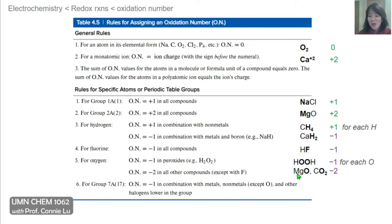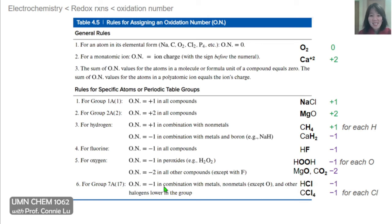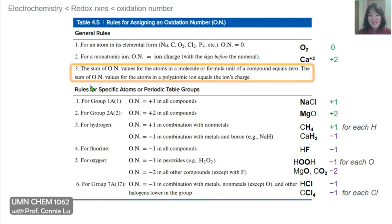Again, oxygen is −2 in common cases like MgO or CO₂, but in a peroxide each oxygen atom has an oxidation number of −1. For the halides, they tend to have an oxidation number of −1 when combined with metals, nonmetals, or other halogens lower in the group — the only exception is oxygen. So for example, chlorine in HCl has an oxidation number of −1, and in carbon tetrachloride, each chlorine atom also has an oxidation number of −1.